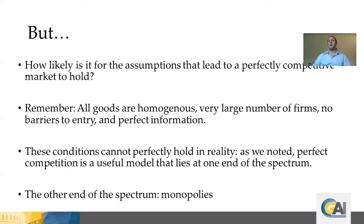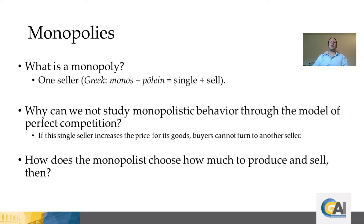Now we look at the other end of the spectrum: monopolies. A monopolist is by definition a single seller. When we talk about monopolistic decision making, we're talking about how this single seller in a particular market tends to make decisions. We use this as one end of the spectrum, but the logic behind monopolist decision making will guide us in understanding the decision-making process of any firm — including firms that are not monopolists.